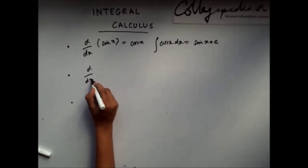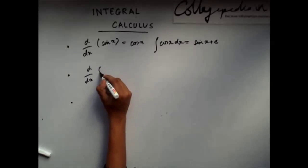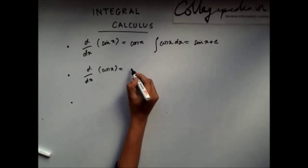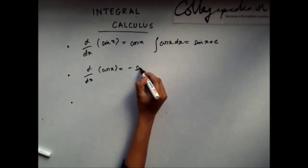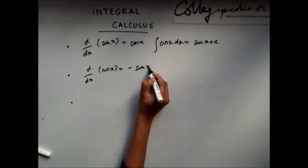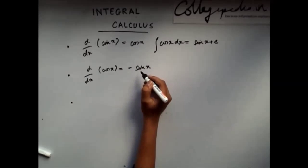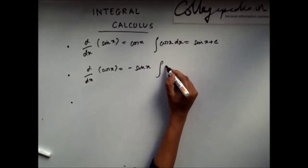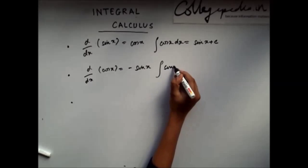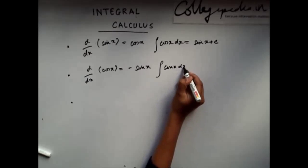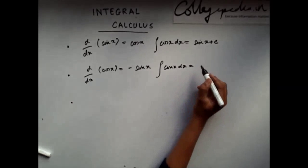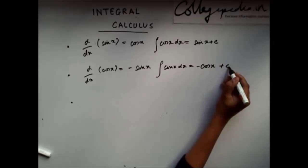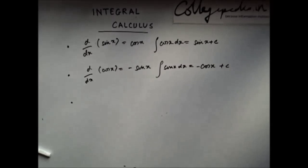Similarly, the derivative of cos x is minus sin x. So, if I integrate sin x dx, I will get minus cos x plus some constant C.